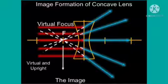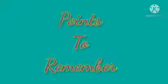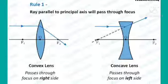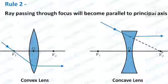Children, there are few points that should be kept in mind while drawing ray diagrams for lenses. First, rays parallel to the principal axis after refraction will pass or appear to pass through the focus. Second, rays passing through the focus after refraction will become parallel to the principal axis.